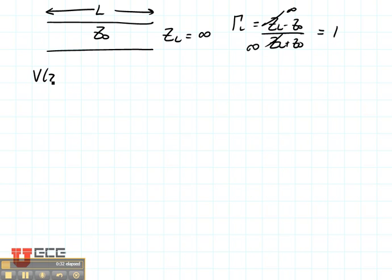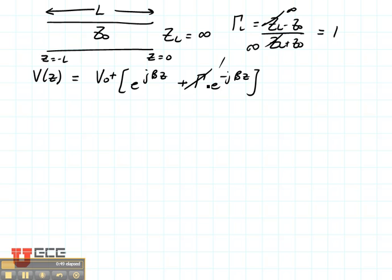The voltage any place on this line, remember Z equals 0 here and Z equals minus L at the input, is always equal to V0+ times e^(jβz) plus the reflection coefficient e^(-jβz). Since the reflection coefficient is 1, we can find the voltage from an open circuit.